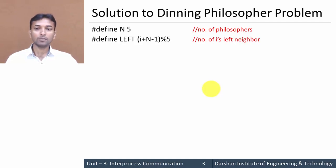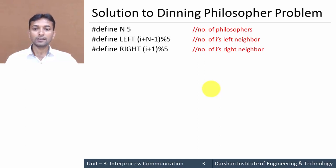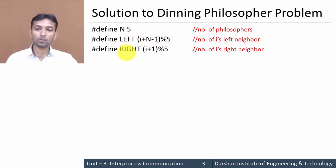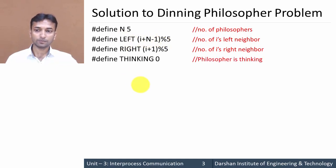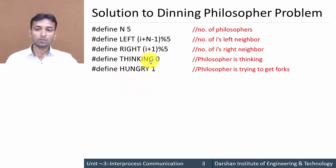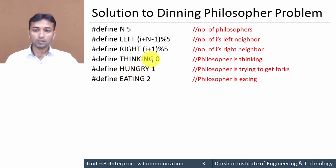#define LEFT (i + N - 1) % N and #define RIGHT (i + 1) % N. These two instructions assign the number of philosopher i's left neighbor and right neighbor to the LEFT and RIGHT variables. Then #define THINKING 0, #define HUNGRY 1, and #define EATING 2. These define the state values: THINKING as 0, HUNGRY as 1, and EATING as 2.